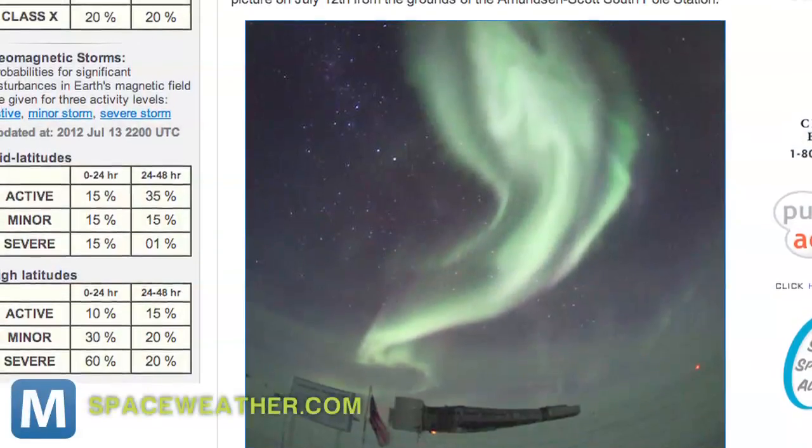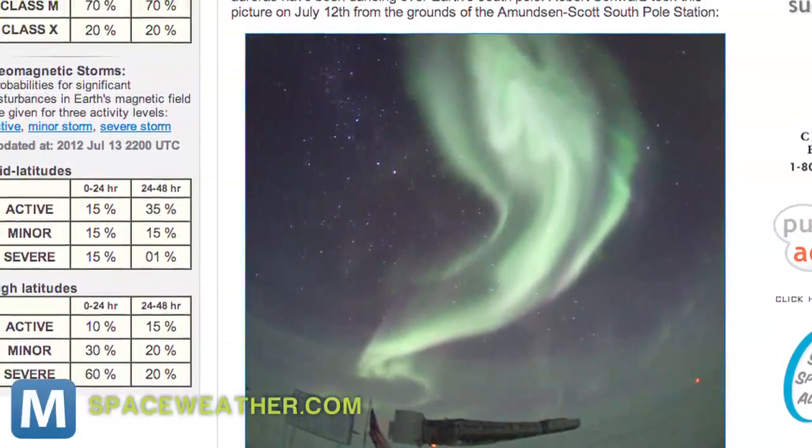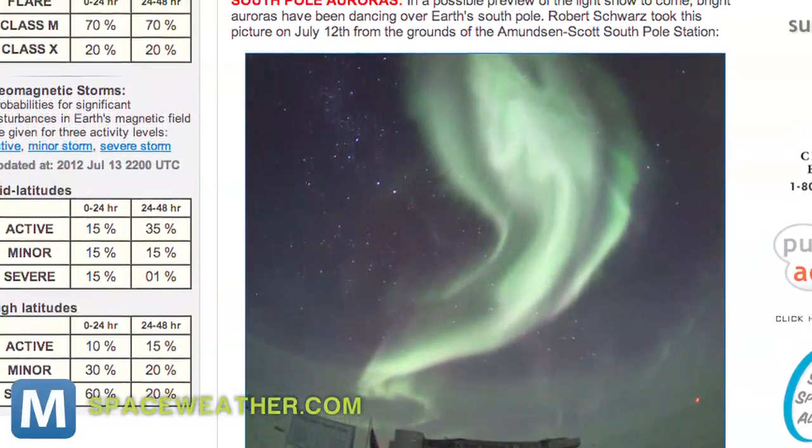NASA says this week's storm isn't expected to do much damage, but it is big enough that it could cause auroras as far south of the pole as New York State. And we should expect more displays in the future. The sun is currently in the middle of an active cycle that's expected to peak in 2013.